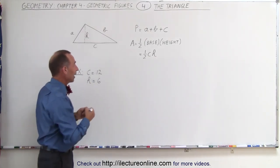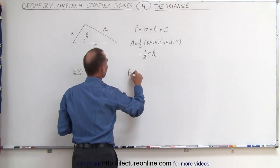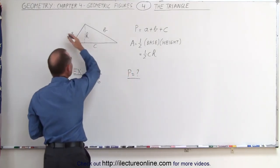So what we cannot do here is find the perimeter. The perimeter will be unknown because we don't know the length of A and B.